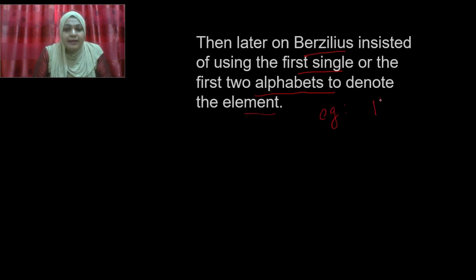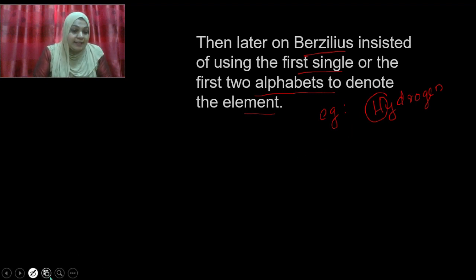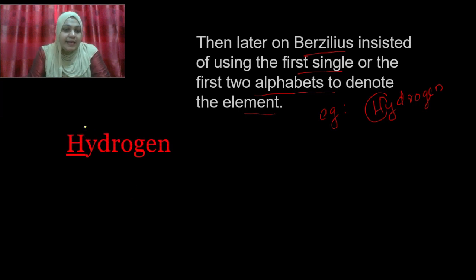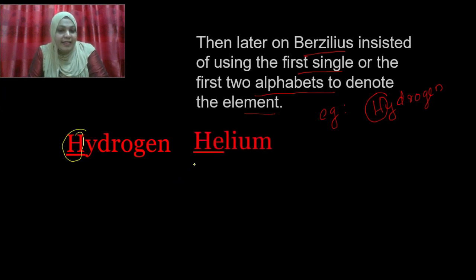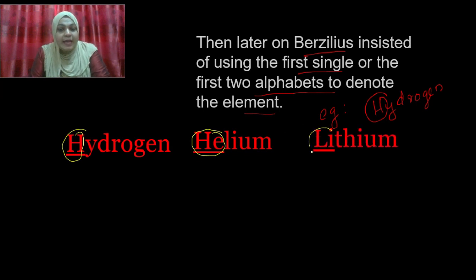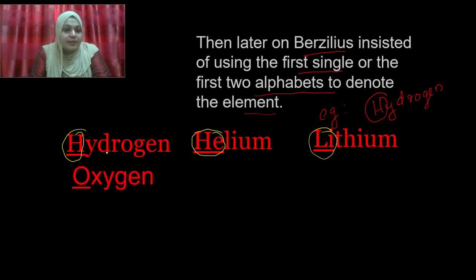Now we can see examples. For hydrogen — what is the first letter? H. So H is the symbol for hydrogen. For helium, don't take H, because H is already taken for hydrogen. So H-E is the symbol for helium. Lithium: Li is the symbol for lithium. Oxygen: O is the symbol for oxygen. Iodine: I is the symbol for iodine.